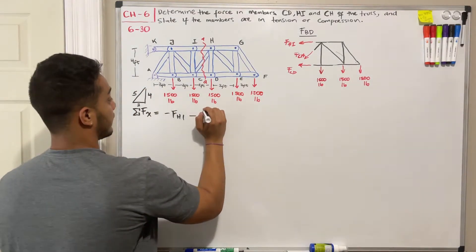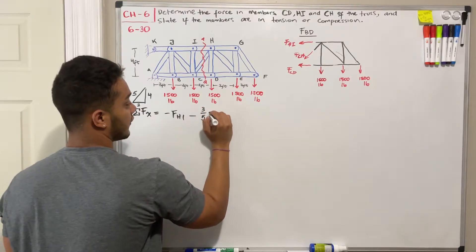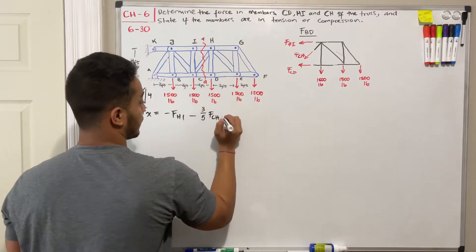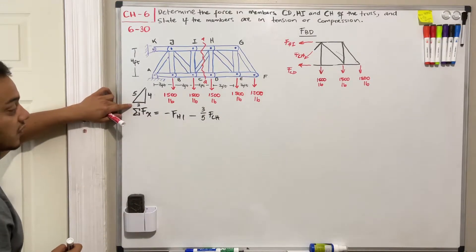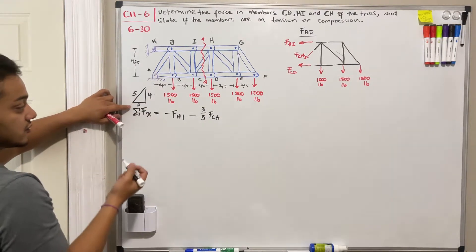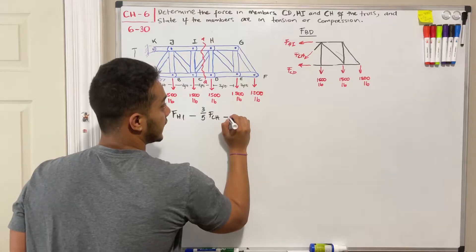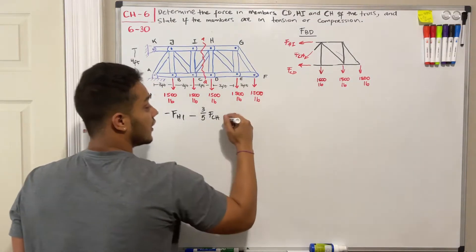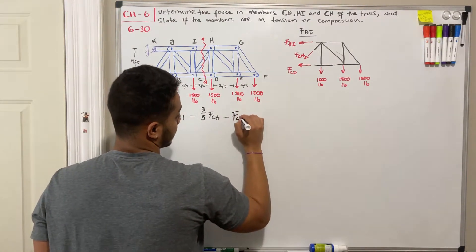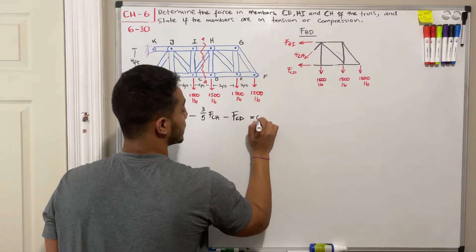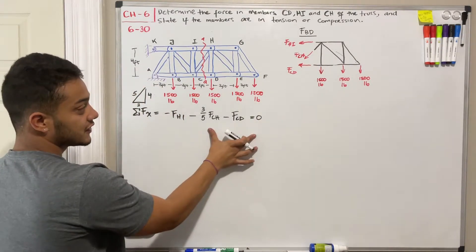So we'll have three out of five of FCH. Why three? Because that's my X component or my horizontal component. And then we got last minus FCD. Okay. And then all this should be equal to zero. But we don't know any of these guys. So I'm going to leave this equation as it is.